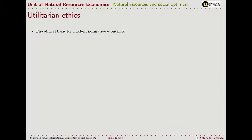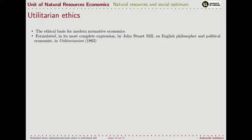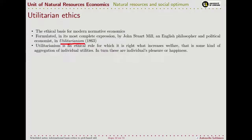Most economists use as their ethics base what is called utilitarianism. Utilitarianism was proposed as an ethics framework by John Stuart Mill. Mill is not the person who started discussion on this topic, but is the author who brought together the previous concepts in his book 'Utilitarianism', which is the most complete expression of utilitarian ethics, and so he is credited with making utilitarianism widely known through the history of economic thought. Utilitarianism is an ethical rule for which whatever increases welfare is right.